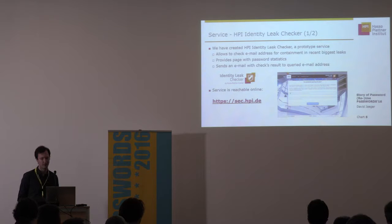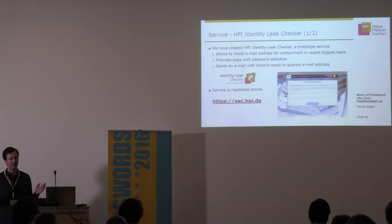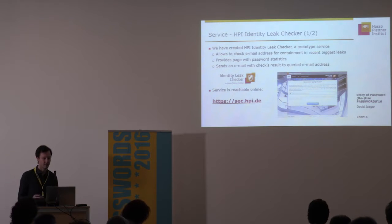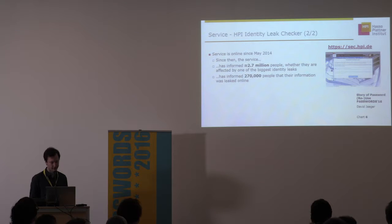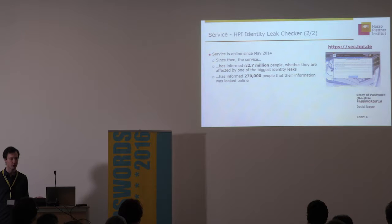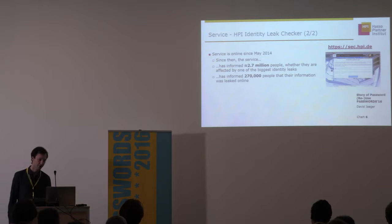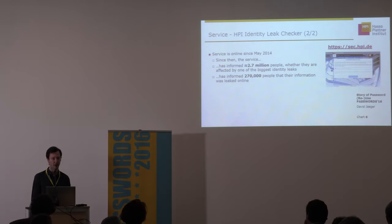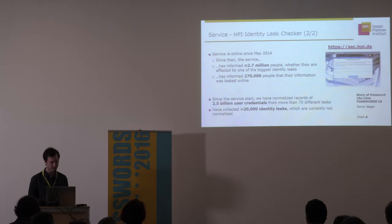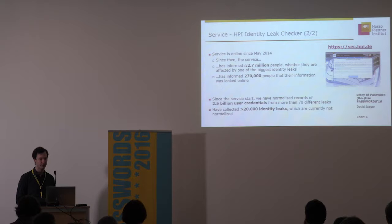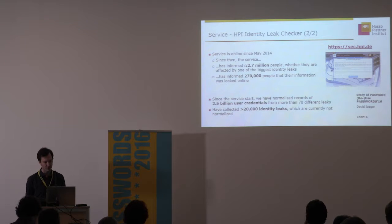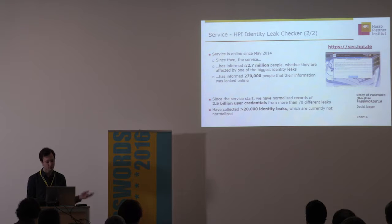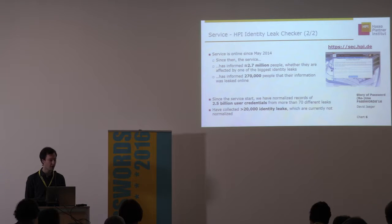This is the service at sec.hbi.de — you type in your email and see whether you are affected by an identity leak. We started the service in May 2014. Since then, 2.7 million people have used it, and 270,000 — about 10% — were actually affected by one or another leak. We now have 2.5 billion credentials from 70 different database leaks, plus over 20,000 smaller leaks collected automatically from Pastebin and other forums.